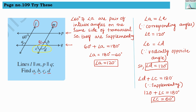Now angle C and angle B are vertically opposite angles, so they are equal. Therefore angle B equals 60 degrees. So here we found the measure of all the angles: angle A equals 120 degrees, angle D equals 120 degrees, angle C equals 60 degrees, and angle B equals 60 degrees.